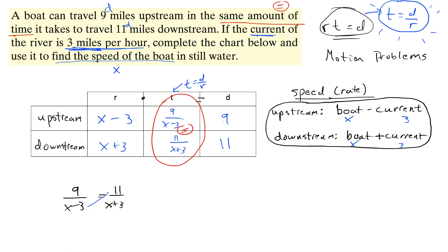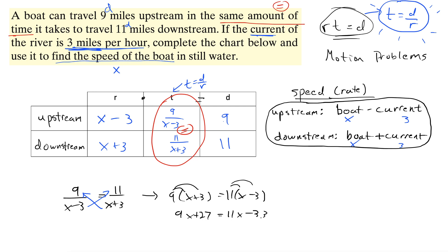We cross multiply since we have a proportion. That gives us 9 times the quantity (x plus 3) equals 11 times the quantity (x minus 3). Distributing: 9x plus 27 equals 11x minus 33. Subtracting 11x from both sides gives negative 2x, and subtracting 27 from both sides gives negative 60, so x equals 30.